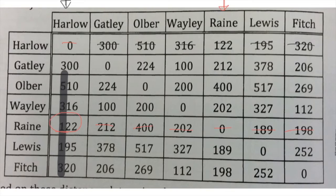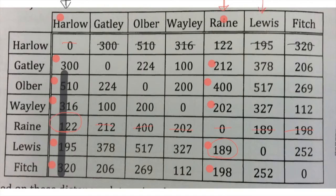Now we look in this column and this one, at all the numbers that aren't crossed out or selected. What's the smallest number out of all of those? 189. So we've now joined town Lewis to the network. We cross out all the other ones in the same row as Lewis. Now we do the same thing again — 189.